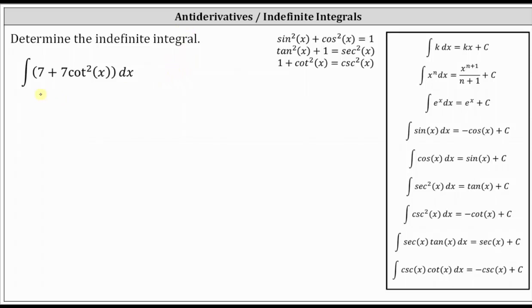If we take a look at the integrand function in the integration formula shown here on the right, notice how we don't have an integration formula for cotangent squared x, which means we'll have to change the form of the function in order to determine the antiderivative or indefinite integral.